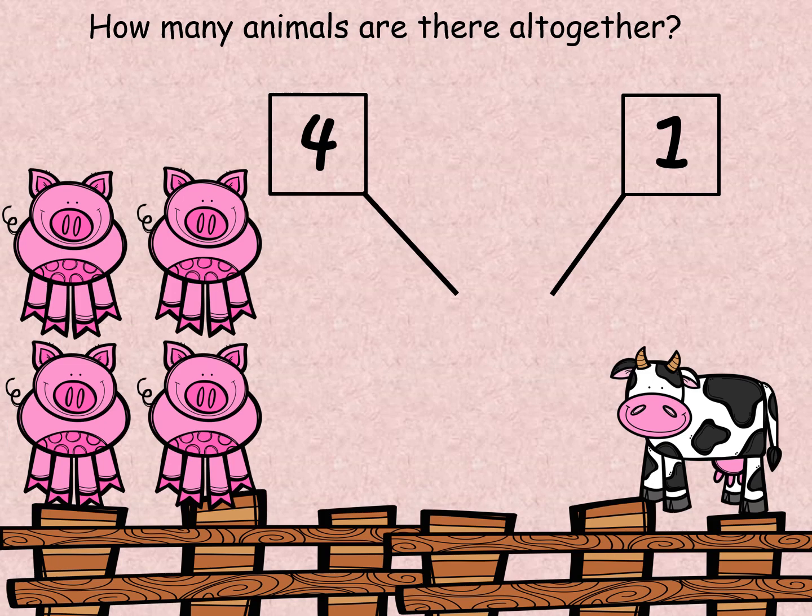How many are all together now? So let's count all the animals. We're going to start at the pigs. One, two, three, four, five. There are five animals all together, because when we go four add one equals five.